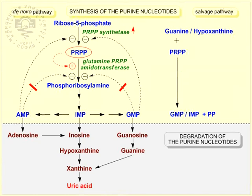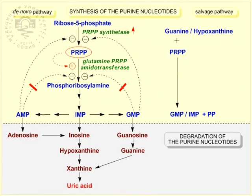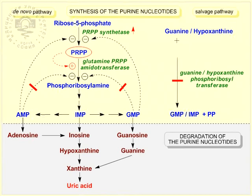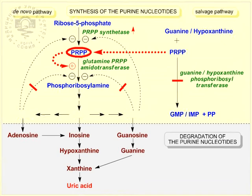A third possible reason is the decreased activity of the enzyme guanine-hypoxanthine phosphoribosyl transferase in the salvage pathway. Phosphoribosyl pyrophosphate is not utilized; it builds up and stimulates the de novo pathway. More purine nucleotides are synthesized and, from them, more uric acid is produced.